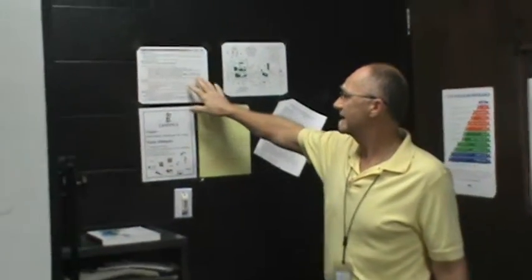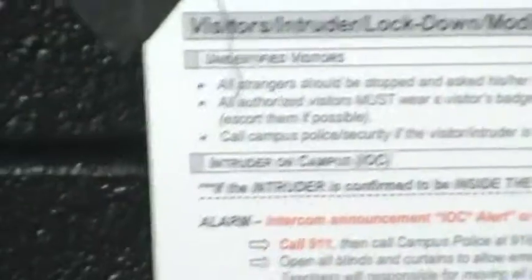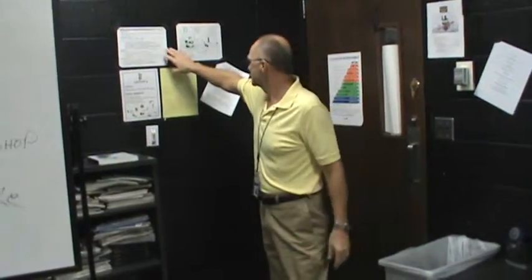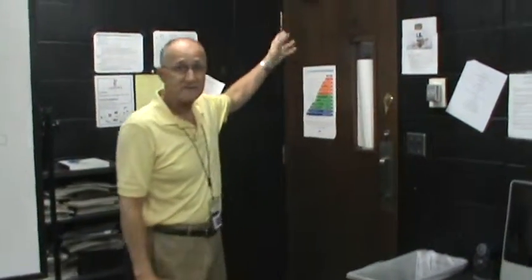We also have an intruder on campus lockdown procedure. If someone has brought a gun to school and they set off the alarm, we lock our doors, cover our windows, and I take my students to the rear of the class away from view of the glass in the window — to protect them and to keep the intruder out. We also have our exit sign; this is the main exit in and out of this room.